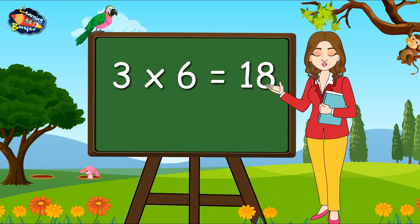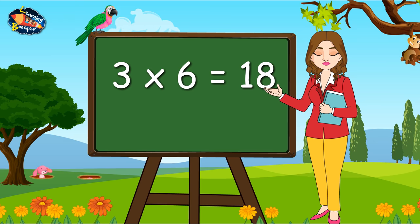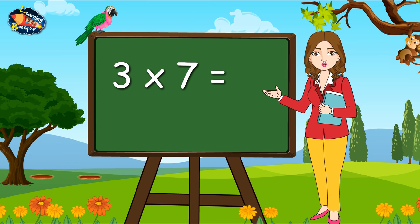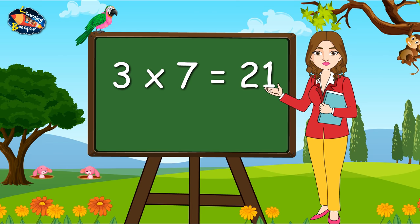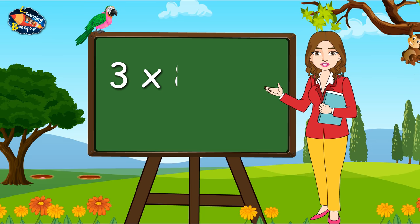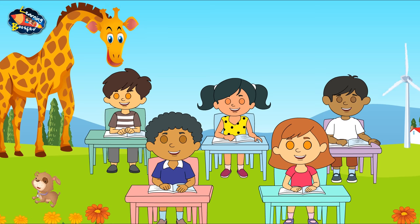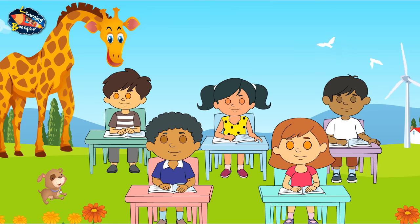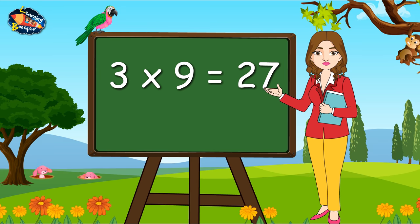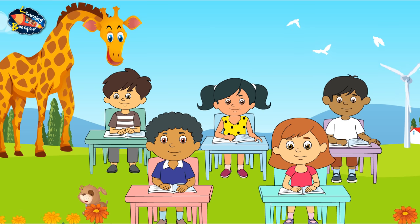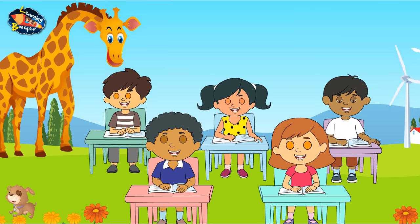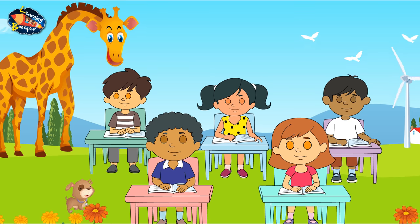Three sixes are eighteen. Three sevens are twenty-one. Three eights are twenty-four. Three nines are twenty-seven. Three tens are thirty.